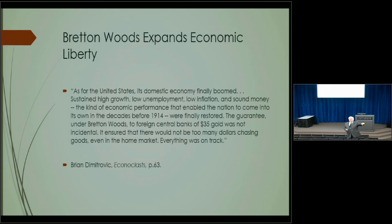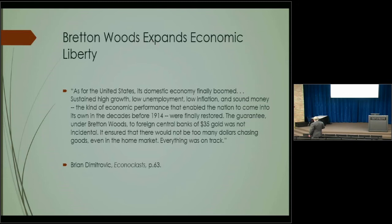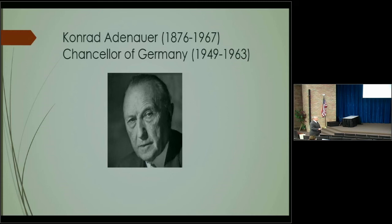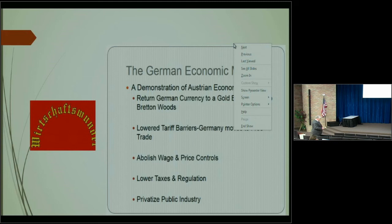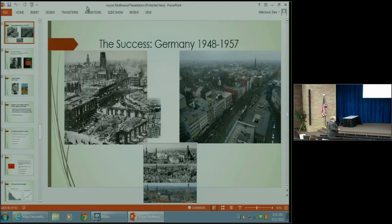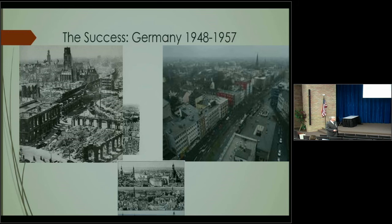Everybody predicted there would be another depression after World War Two — there wasn't. There was an enormous boom that lasted all the way to 1971. The income of all sectors of the economy grew at the same rate — 33 percent. People were living 33 percent better in 1971 than in 1945. That tremendous boom was based on two things: free trade and sound money.